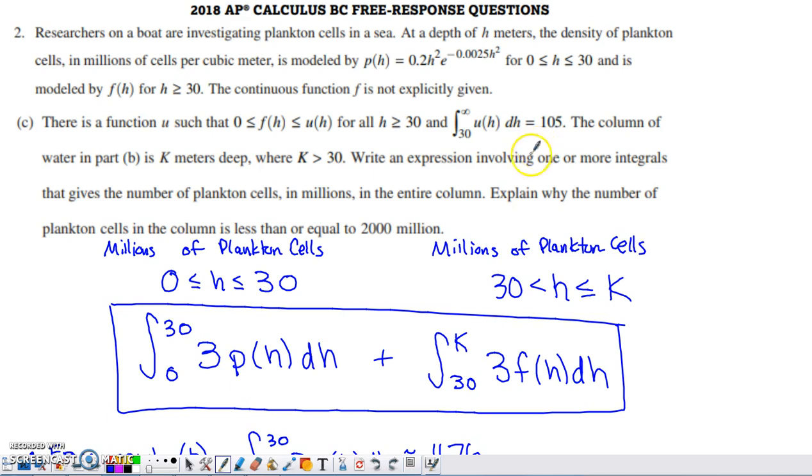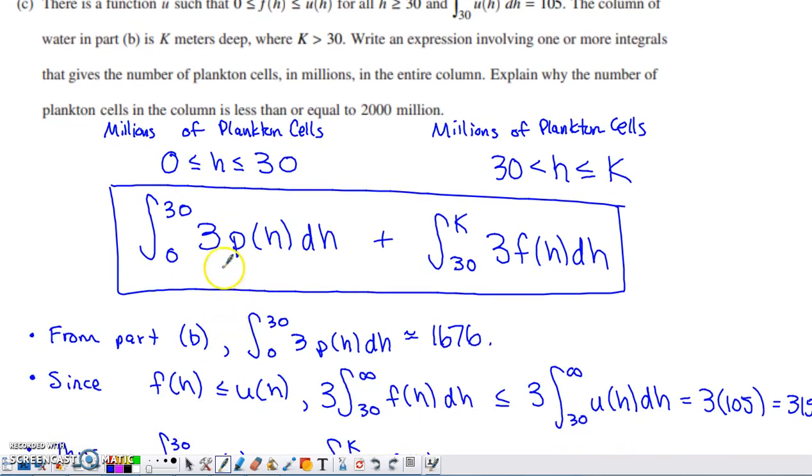Okay, so think about that last sentence. Explain why the number of plankton cells in the column is less than or equal to 2,000 million. So this is the total number of plankton cells in the column of water.